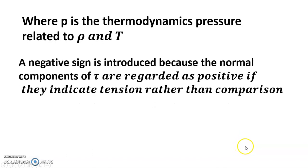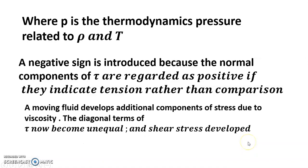A negative sign is introduced because the normal component of tau are regarded as positive if they indicate tension rather than compression. A moving fluid develops additional components of stress due to viscosity.